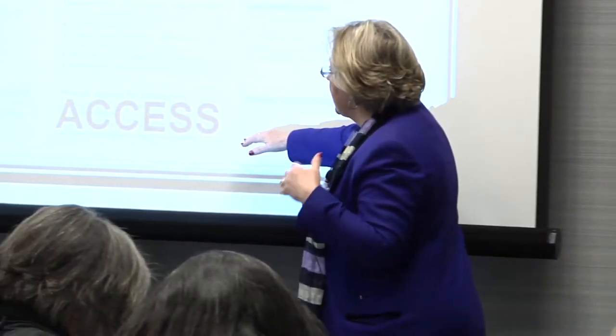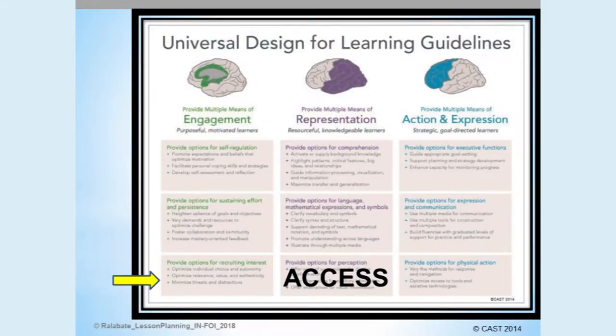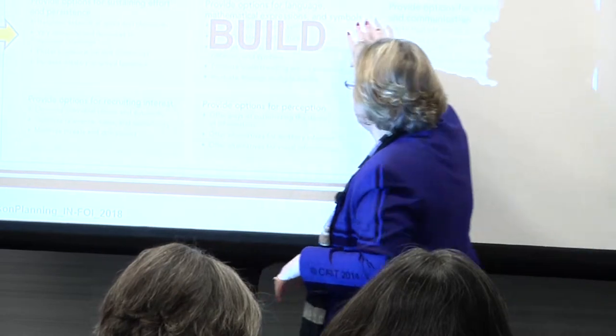A lot of other people who teach about UDL feel the same way. The UDL guidelines are also structured vertically — across the row horizontally, all of the guidelines in that row have to do with how we access information. CAST just came out with this explanation, although a number of us have been talking about it for years. The items along the middle row really have to do with how you build skills, knowledge, and understanding.